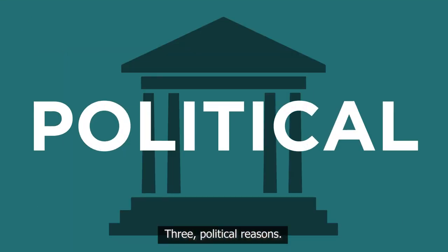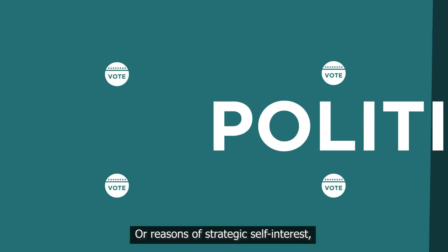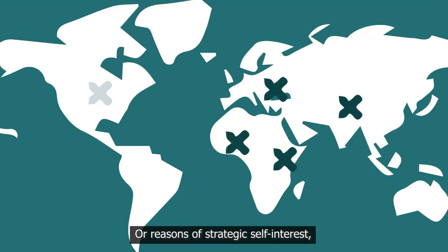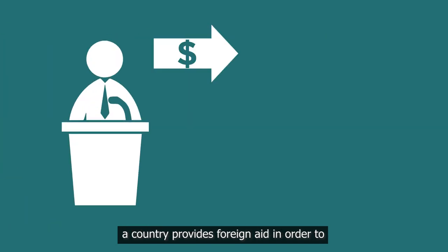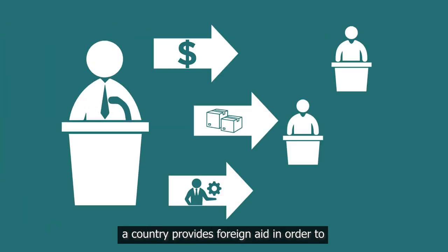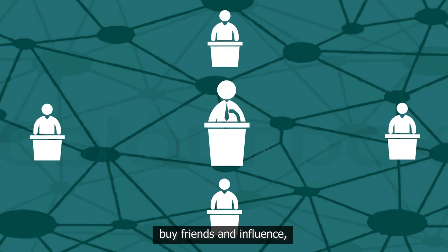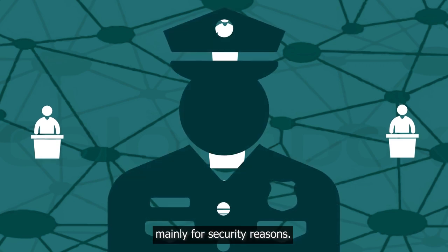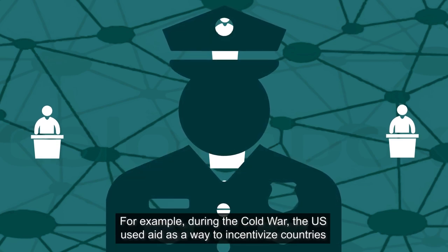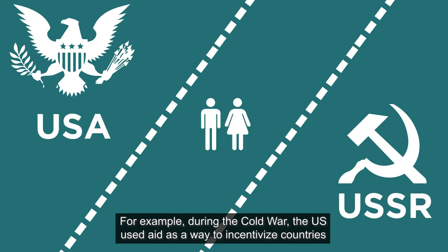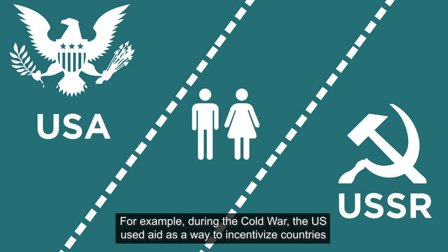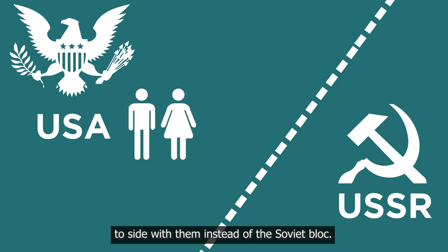Three: political reasons, or reasons of strategic self-interest. A country provides foreign aid in order to buy friends and influence, mainly for security reasons. For example, during the Cold War, the US used aid as a way to incentivize countries to side with them instead of the Soviet bloc.